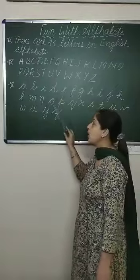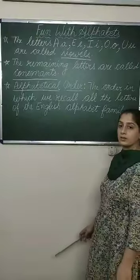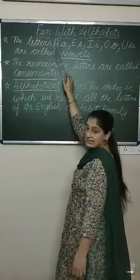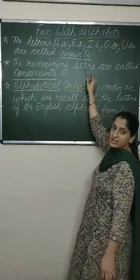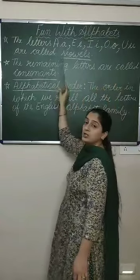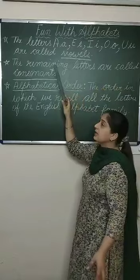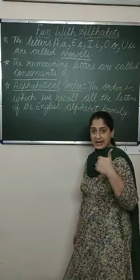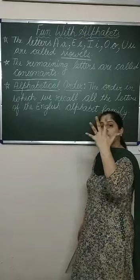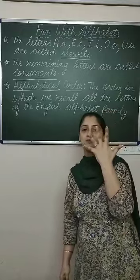In the same way, the small letters are also written like this. The letters A, E, I, O, U are called vowels. Just as there are five fingers on our hands, there are five vowels: A, E, I, O, U.